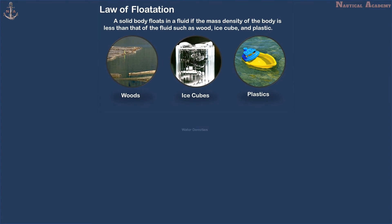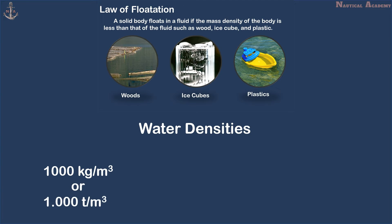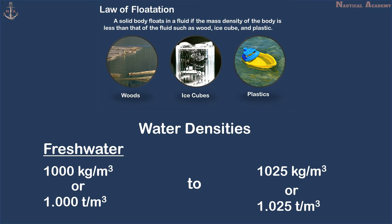We know that the density of water may vary between 1,000 kg per cubic meter or 1.0 ton per cubic meter, which is the density of fresh water, up to 1,025 kg per cubic meter or 1.025 tons per cubic meter, which is the density of salt water.